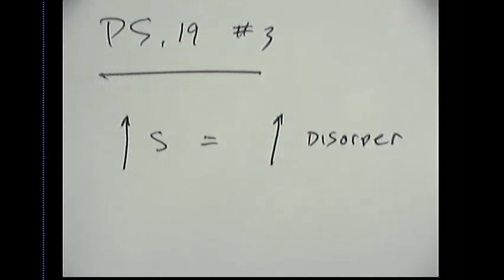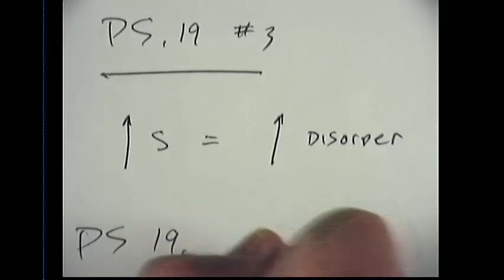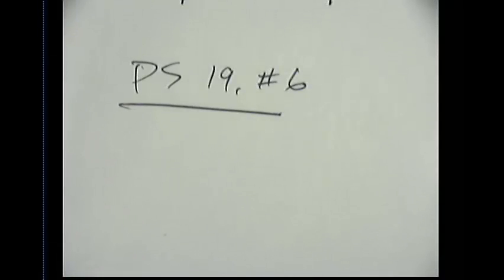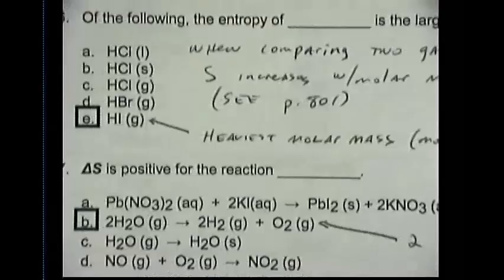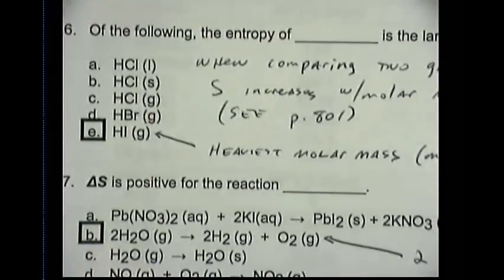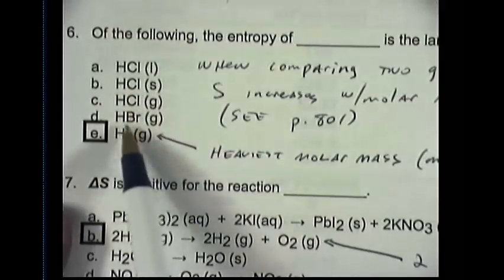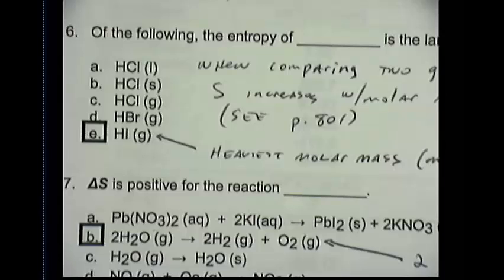We are now going to take a look at problem set number 19, question number six. In this question, we're given several different compounds, and we're asked which of the following compounds will have the largest entropy. I'm not going to rewrite all of those compounds here on the page, but instead, I'm going to zoom into the actual question so that we can see it. You can see each of these compounds here. I've got HCl liquid, HCl solid, HCl gas, HBr gas, and HI gas. Which of those has the largest entropy?